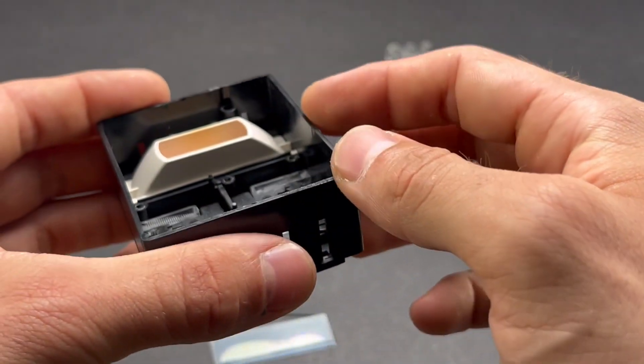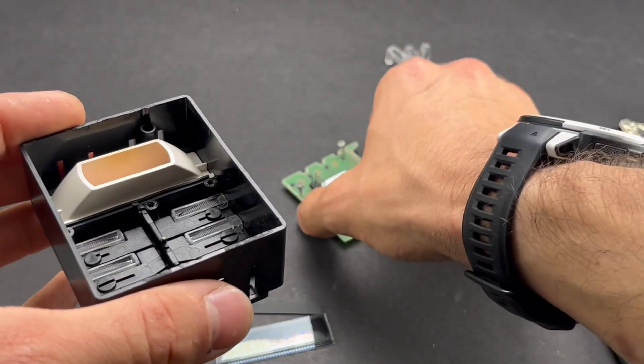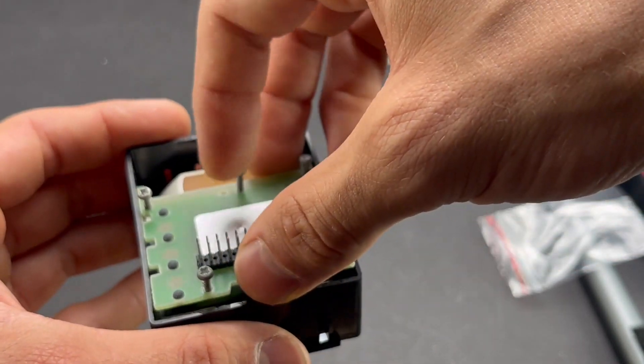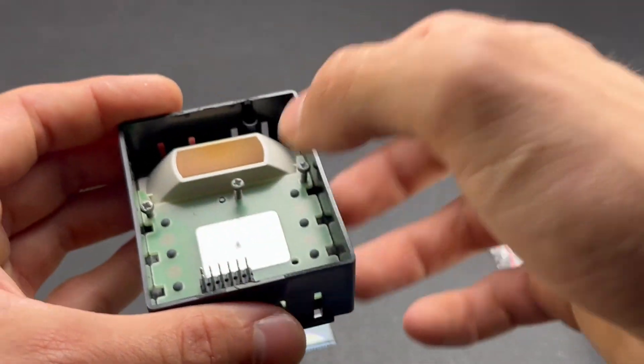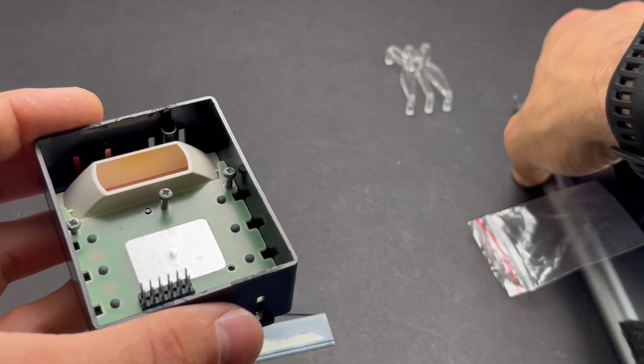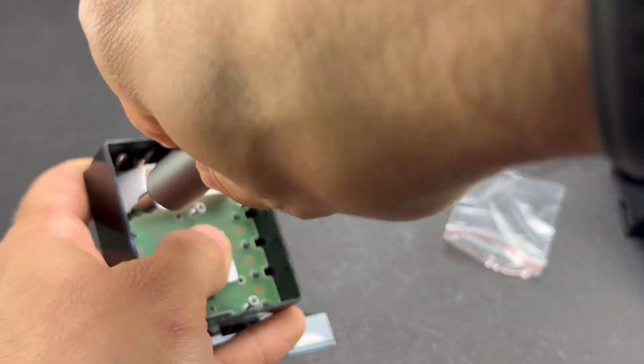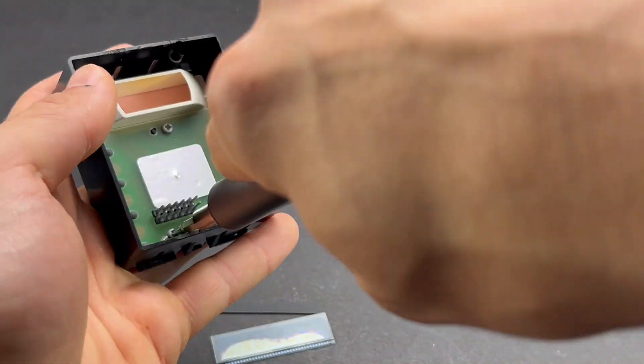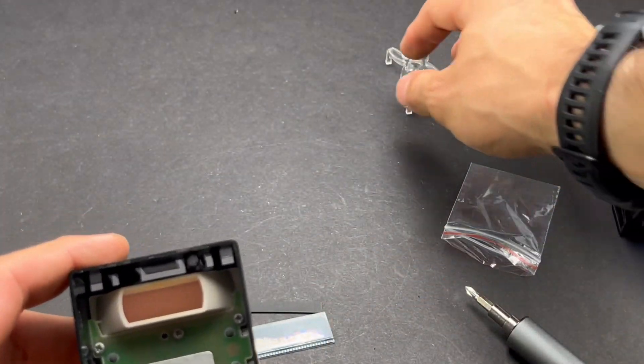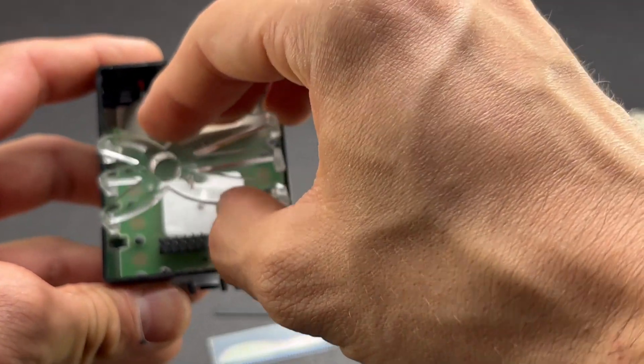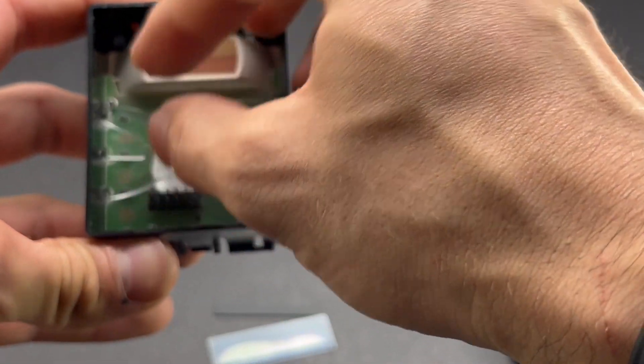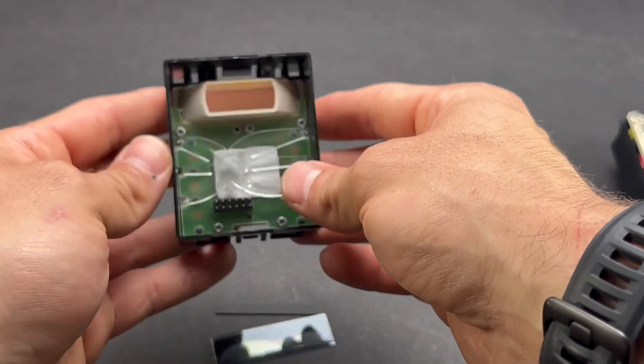It should be flat, relatively flat, and then we're good to go. Put this back on and tighten all of our screws back up. All right, so that's all good and then we'll put our light diffuser back in, just like that.